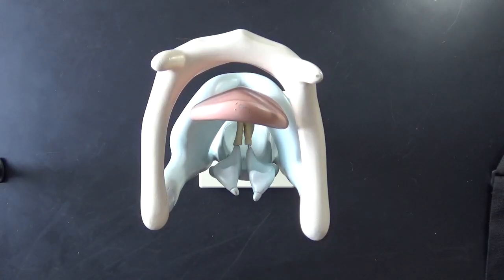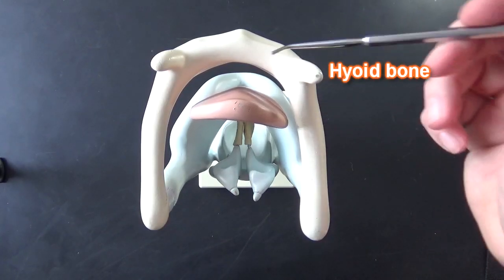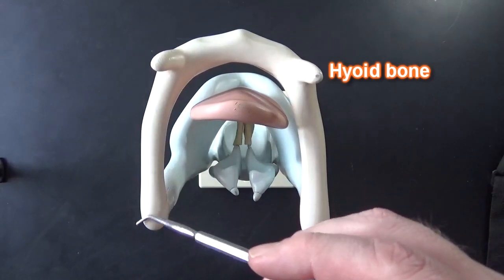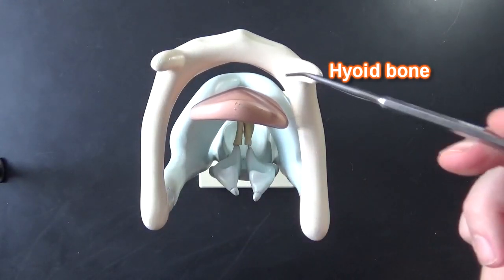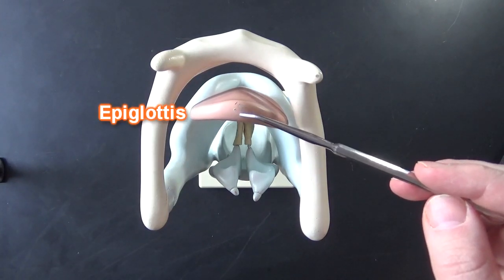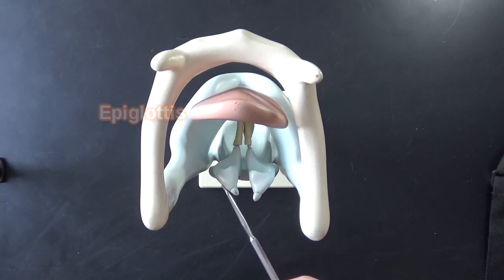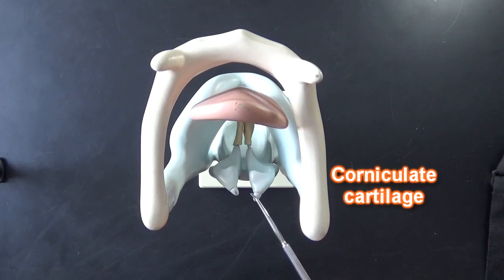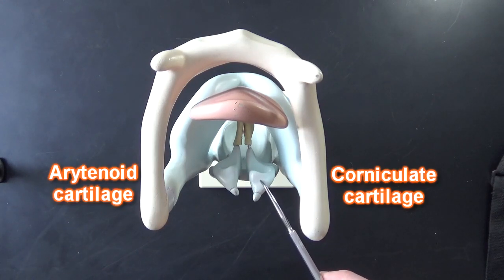If we look inside here we can see the hyoid bone up here and we've got the greater cornu and the lesser cornu and the body of the hyoid bone here. This is the epiglottis right here and we can see the top of the corniculate cartilages and the arytenoid cartilages.